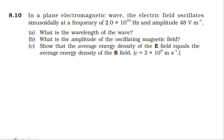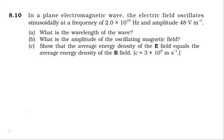For the third part: show that the average energy density of the electric field equals the average energy density of the magnetic field. The energy density of the electric field is (1/2)ε₀E², and the energy density of the magnetic field is B²/(2μ₀). We use the relation that the speed of light equals E divided by B.